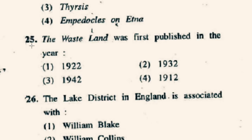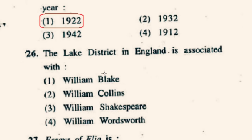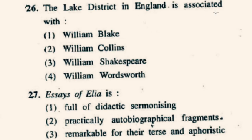Question number 25: The Wasteland was published in which year? The correct option is 1st: The Wasteland was published in 1922. Question number 26: The Lake District in England is associated with which poet? William Wordsworth was born in Cockermouth on 7th April 1770 and his first home was in the Lake District. His great autobiographical poem The Prelude traces the growth of the author from his early years, and the Lake District formed part of his very identity. Option 4th, William Wordsworth, is correct.